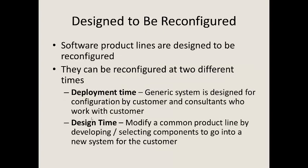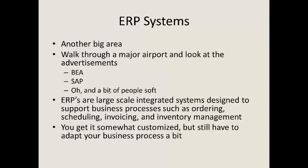Software product lines are generally designed to be reconfigured. At deployment time, the generic system is configured for the customer — consultants work with the customer to configure it for their exact needs; SAP and PeopleSoft do this. At design time, you modify a product line by developing or selecting components for the new customer system. Enterprise resource planning systems — large-scale integrated systems like SAP that support business processing such as ordering, scheduling, invoicing, and inventory management — are configured mostly at deployment time, though you still have to adapt your business processes to them quite a bit, unless you have very deep pockets.